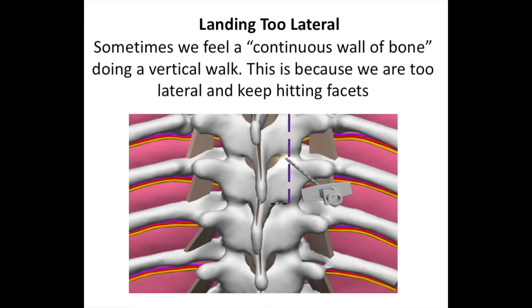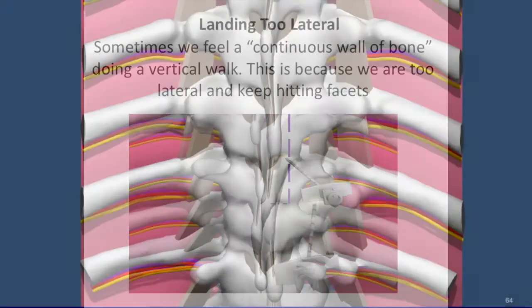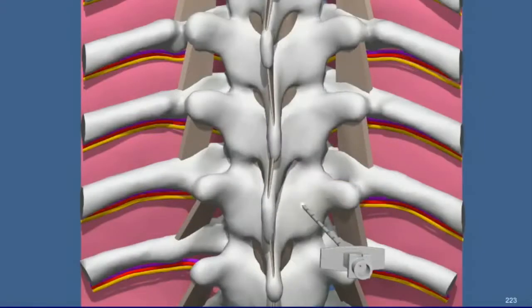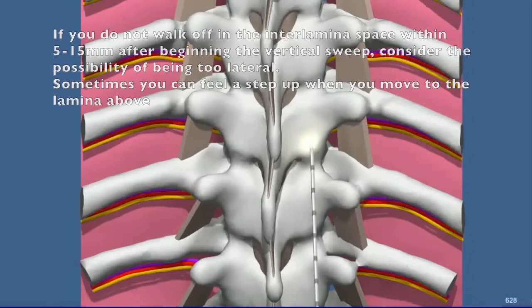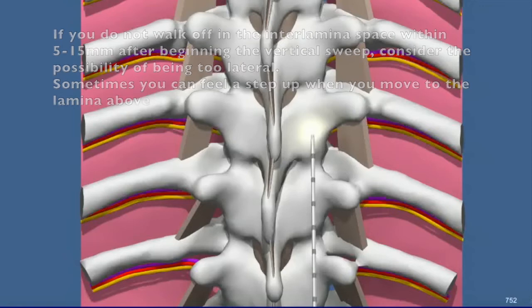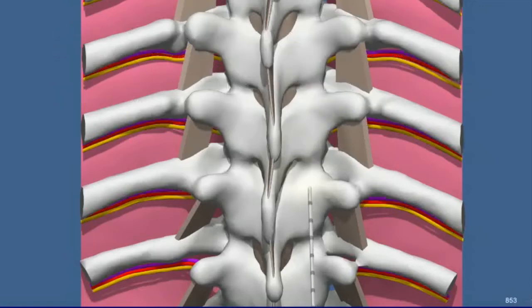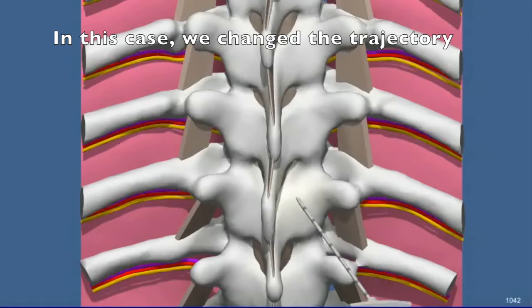Landing too lateral: sometimes we feel a continuous wall of bone during a vertical walk. This is because we are too lateral and keep hitting facets. If you do not walk off into the interlaminar space within 5-15mm after beginning the vertical sweep, consider the possibility of being too lateral. Sometimes you can feel a step up when you move to the lamina above. In this case, we change the trajectory.